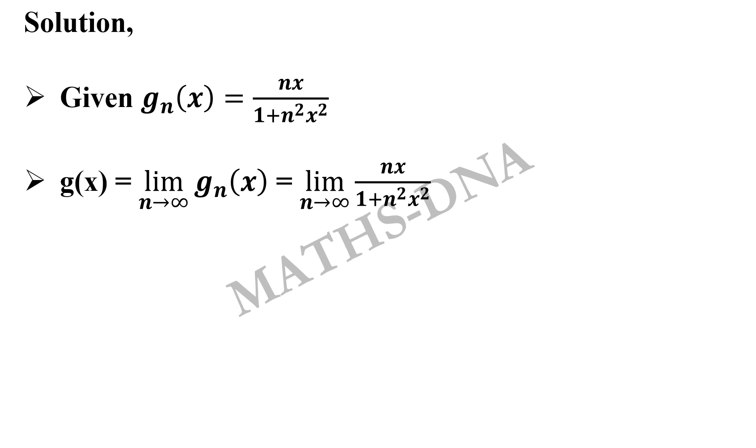Then g(x) equals limit n tends to infinity g_n(x), which is equal to limit n tends to infinity nx upon 1 plus n square x square. Now we eliminate n from the numerator as well as from the denominator.